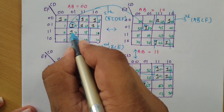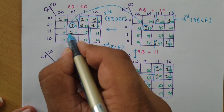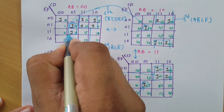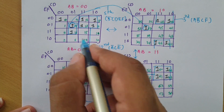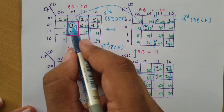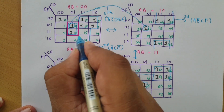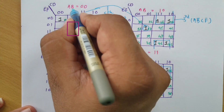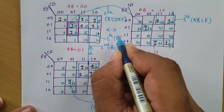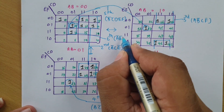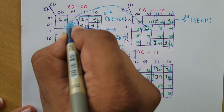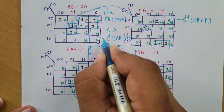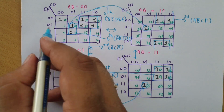Now I just need to cover this one remaining cell. I can make a two-cell combination. I could also use another combination, but I am making this combination — so this is my sixth group. AB is 00, meaning Ā·B̄. CD is 01, so C̄·D. EF is 01 and 11, so F is 1. This is the sixth group.